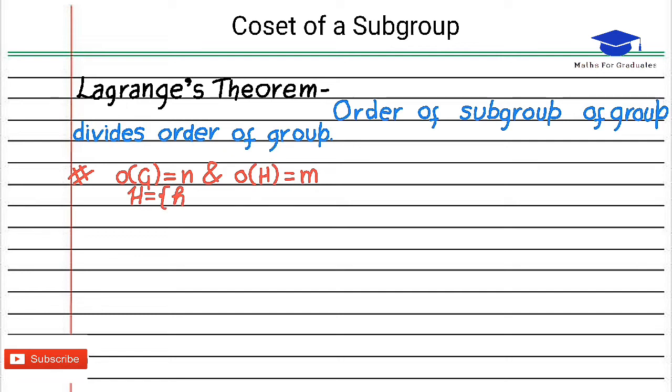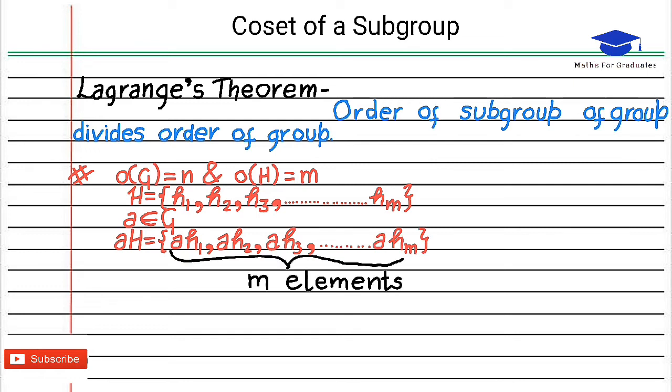Let h₁, h₂, h₃ to hₘ be the elements of H. Then for any element a of G, aH also has m elements. Hence order of aH is also m.